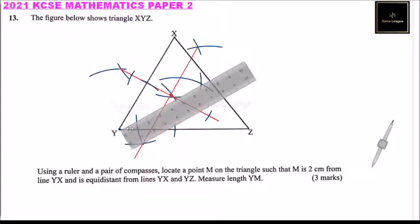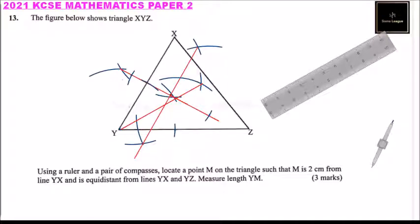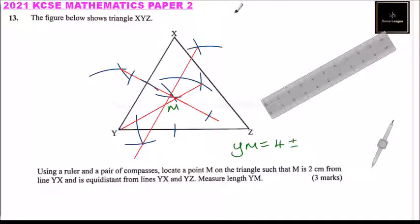So you bring your ruler here and draw the line which bisects the angle. So that is the line. We now draw a line that bisects the angle. With that, you can see we have obtained the point M. This is our M. And you are told to measure the length of YM. If you do it correctly, you'll find YM equals four point zero plus or minus zero point one centimeters. So that is the procedure you follow when doing that question, and you'll get your three marks.